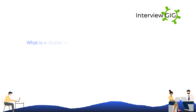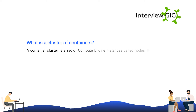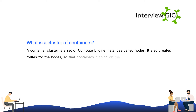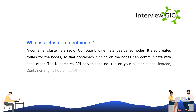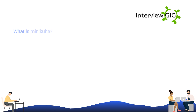What is a cluster of containers? A container cluster is a set of compute engine instances called nodes. It also creates routes for the nodes so that containers running on the nodes can communicate with each other. The Kubernetes API server does not run on your cluster nodes; instead, the container engine hosts the API server.